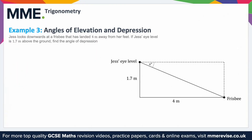Example three — angles of elevation and depression. Jess looks downwards at a frisbee that has landed four meters away from her feet. If Jess's eye level is 1.7 meters above the ground, find the angle of depression. Give your answer to one decimal place. We've got a little diagram here, and I'm trying to find this value of x. The easiest way is to relabel the sides — because this is a rectangle, this side is also just four and this side is 1.7 meters.